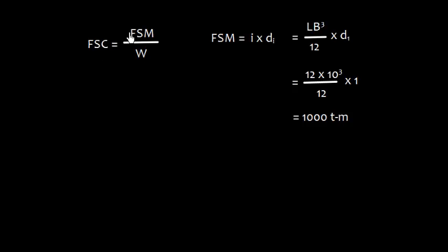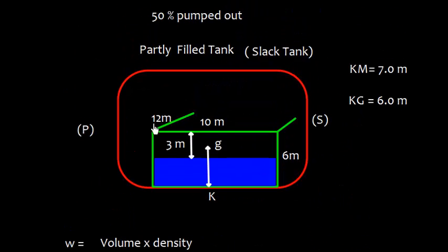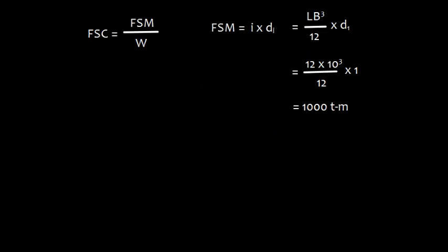Now, let us work out on free surface correction which is given by this formula that free surface correction is free surface movement divided by displacement. Free surface movement is given by I into DI where I is the second moment of area or moment of inertia about center line. For box shape vessel, it is LB cubed by 12 and DI is the density of a liquid inside which is fresh water. The dimensions were 12, 10 and 6. All we need to find out and the value is 1000 ton meter.